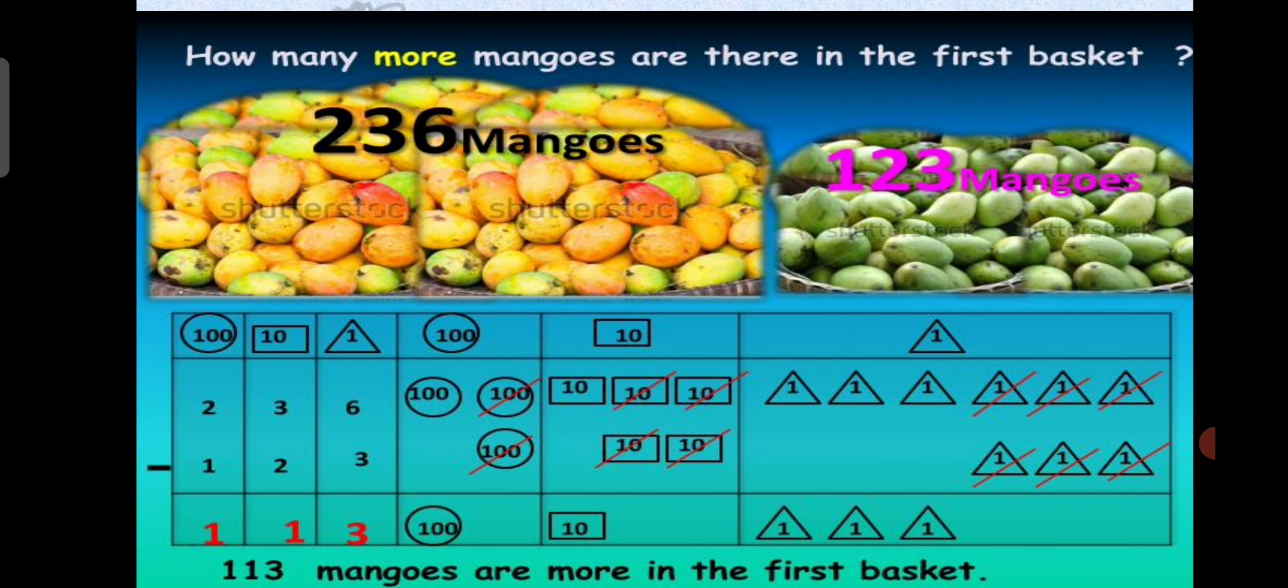So let us start. This is a simple group activity which can be performed in the class. How many more mangoes are there in the first basket? See, there are two baskets. In the basket one, some mangoes are there and in another basket, some other mangoes are there. In the first basket we have 236 mangoes, and in the second basket we have 123 mangoes. The activity is performed with the help of flashcard or the printed currencies. Here we can simply divide in a group of five to four students in a group, and we can perform this activity very simply.